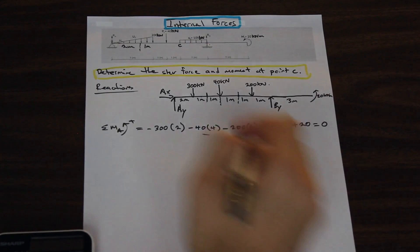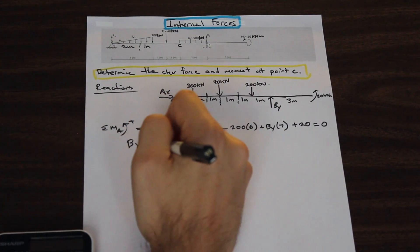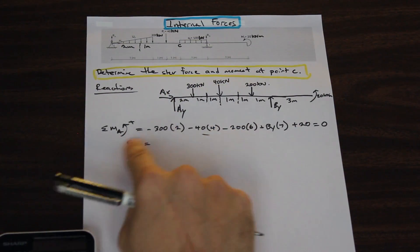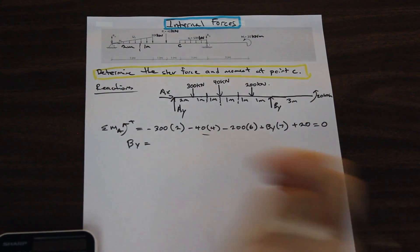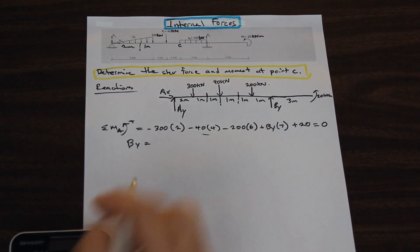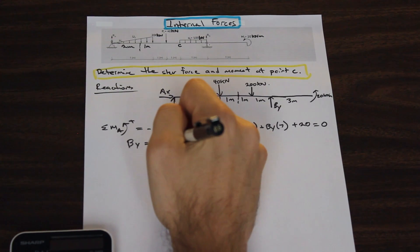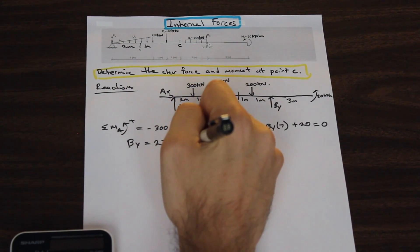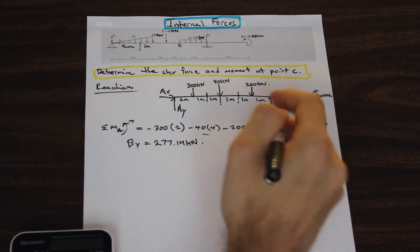Cool. So as we've done before, all we need to do is solve for BY. So we have everything, and this is going to switch signs. BY, we can keep that the same. So we have 1,200 plus 160 plus 600 minus 20 divided by 7. That's going to give us 277.14 kilonewton in the upward direction.